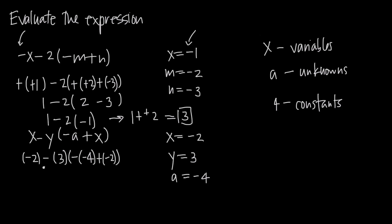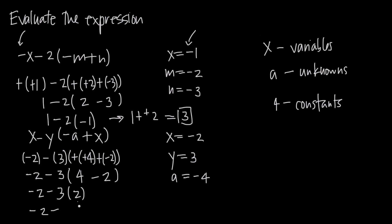We can bring this negative 2 outside the parentheses. Then minus a positive 3 times the quantity — negative negative 4 becomes positive 4, and plus negative 2 becomes just minus 2. Now we get negative 2 minus 3 times the quantity 4 minus 2, which is 2. That gives us negative 2 minus 3 times 2, which is 6. And then negative 2 minus 6 gives us a negative 8. That's the answer we get when we evaluate this expression given these values for the variables and the unknown.